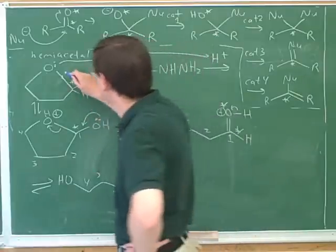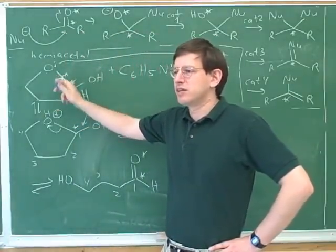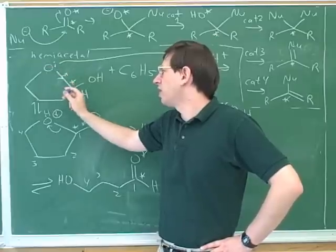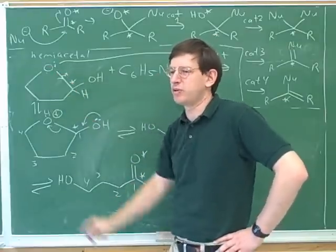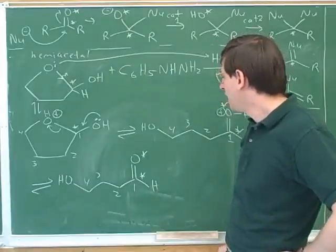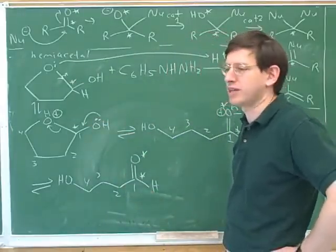But even without the mechanism, we should have been able to see this is the bond that we need to break to get back to the carbonyl. Because this is the bond that would have been formed when the alcohol attacked the carbonyl. So, if we're going to do the reverse, we should be breaking the bond from where the alcohol attacked the carbonyl. And then we're forming a new pi bond over here. So, it's good to practice so that you can do this with or without the mechanism.